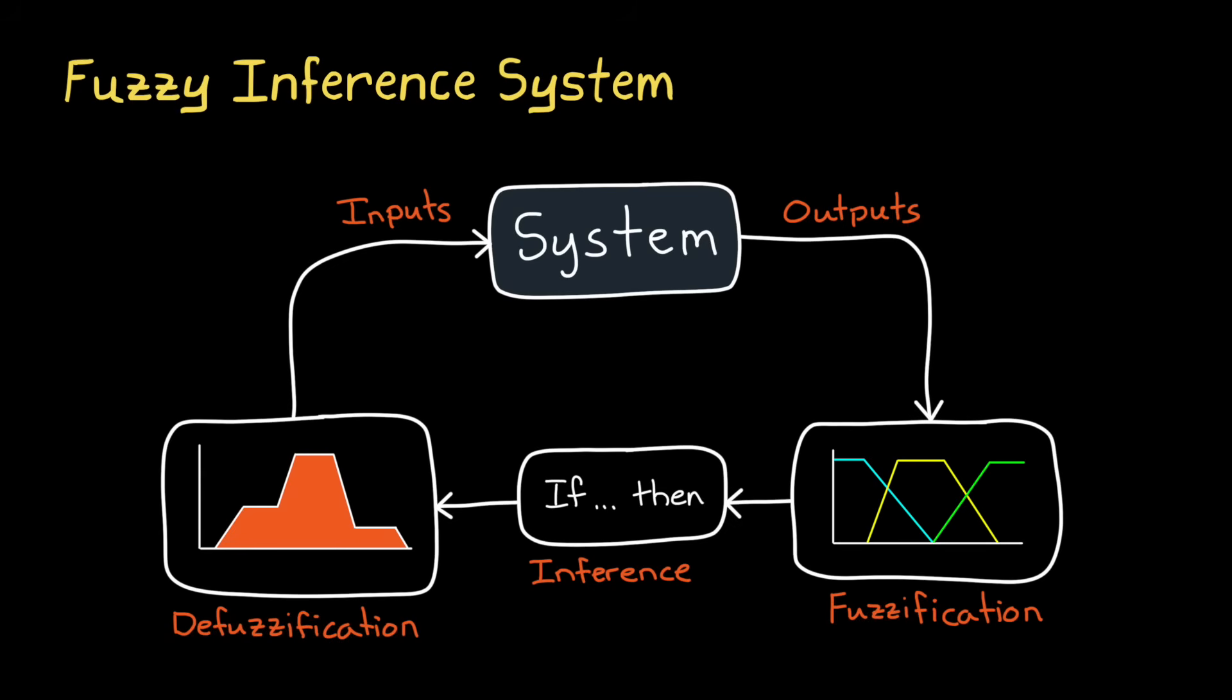A fuzzy inference system consists of three main components. Fuzzification, which takes the outputs of the system and converts them into fuzzy sets. And then there is a rule base, which contains a set of if-then rules. Things like, if a value is in this set, then the output should be this value. And depending on how much it's in that set determines how much the output is applied. And finally there is defuzzification, which translates the outputs of the if-then rules back into crisp values that are fed back into the system.